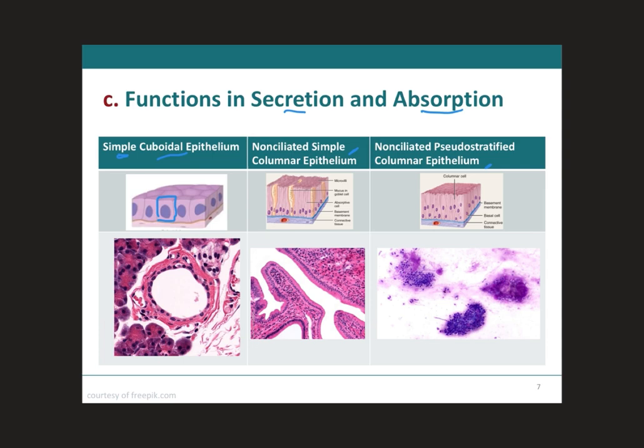With regards to the simple cuboidal epithelium, you can see how the cells are displayed in one layer with a squared shape — that's why it's called simple cuboidal epithelium. They're going to be located on the surface of ovaries, they line the interior surface of the capsule of the lens of the eyes, they form the pigmented epithelium at the posterior surface of the retina, they line kidney tubules and smaller ducts of many glands, and they make up the secretory portion of some glands such as the thyroid gland and the pancreas.